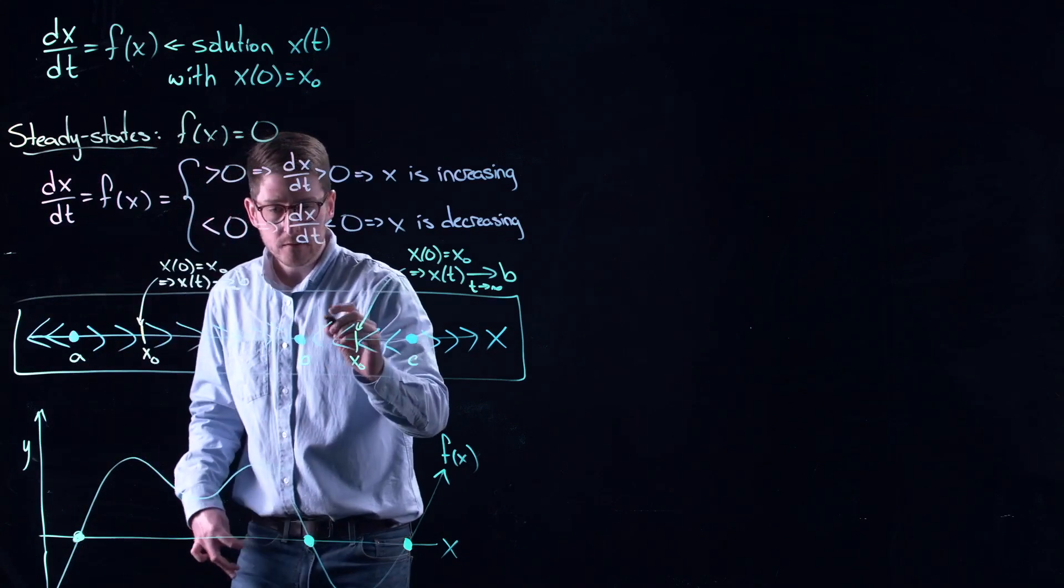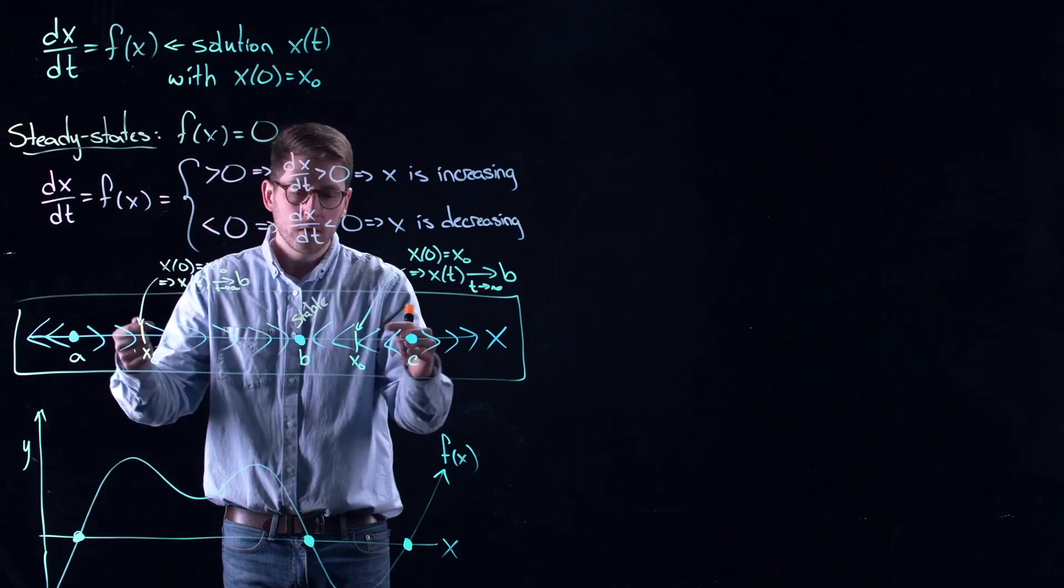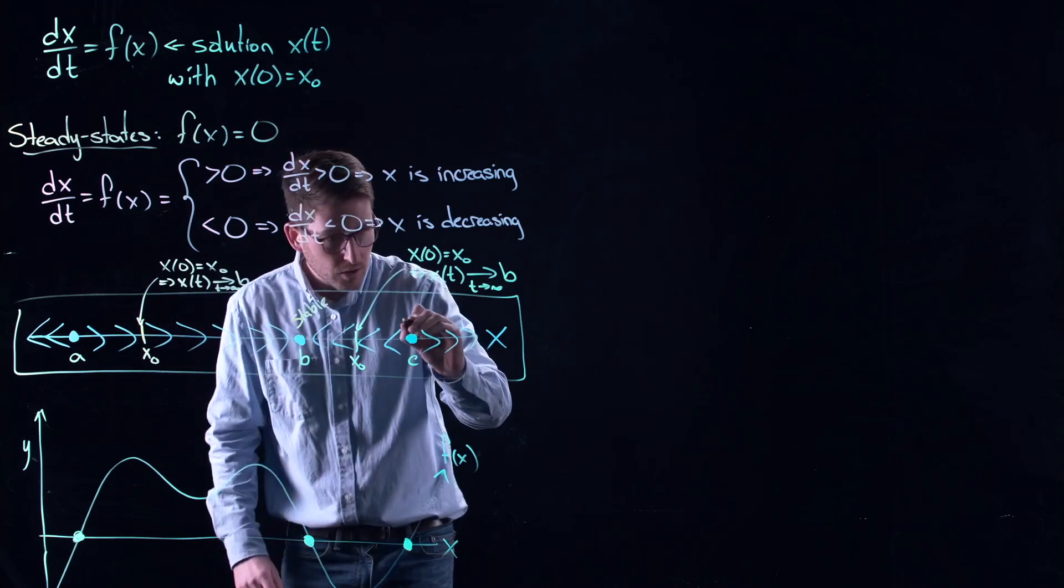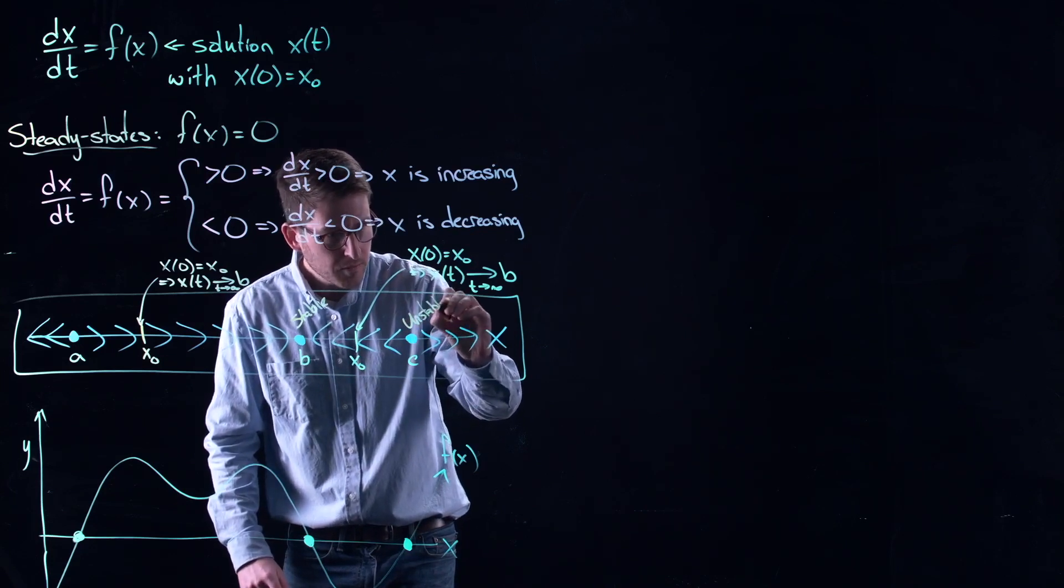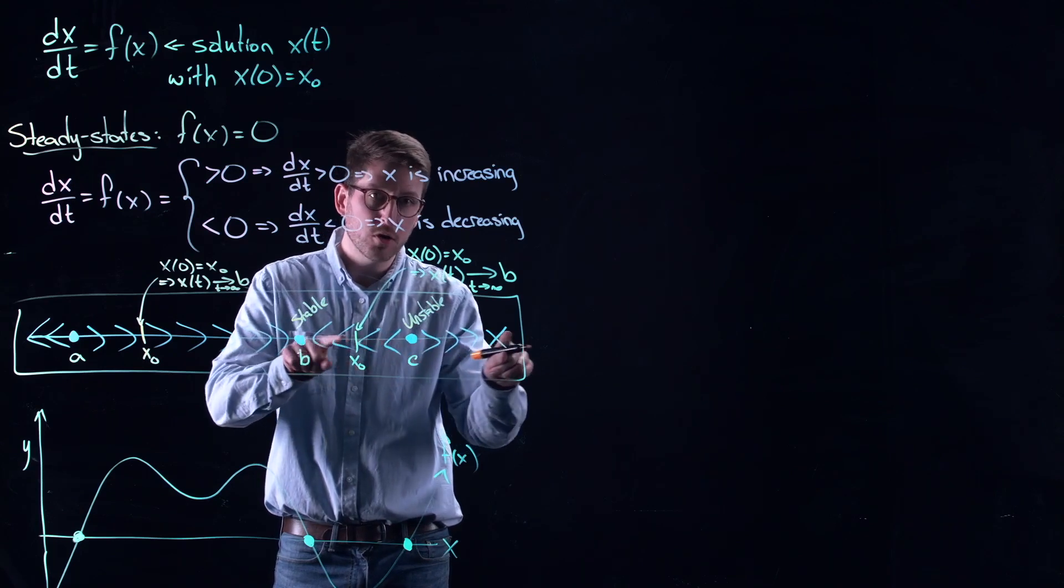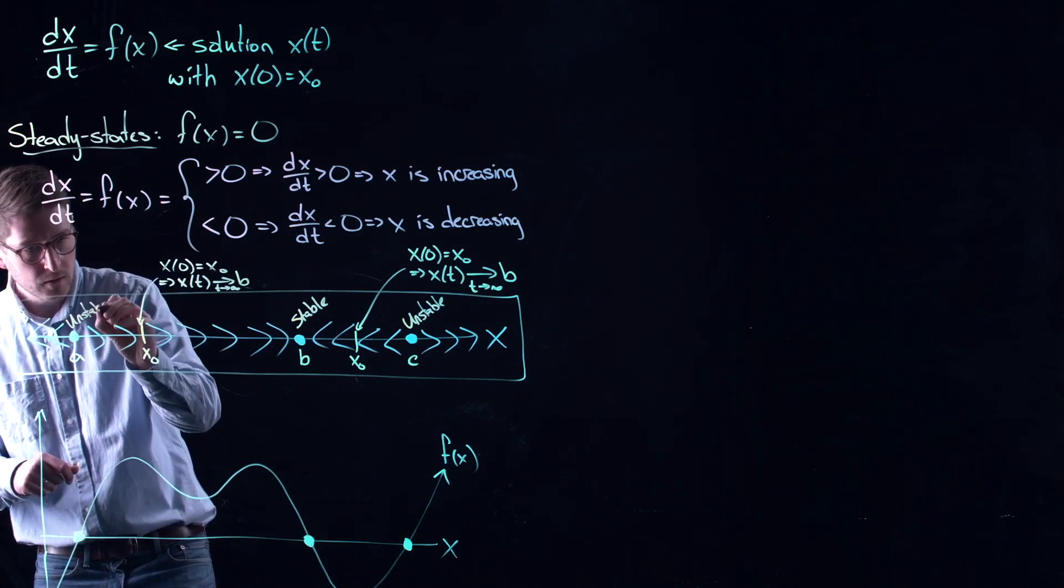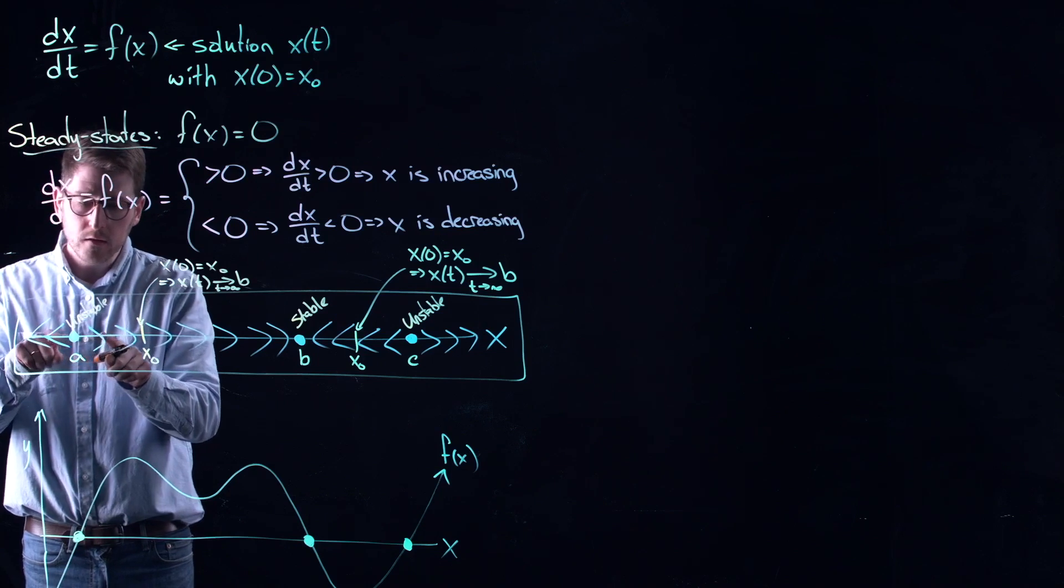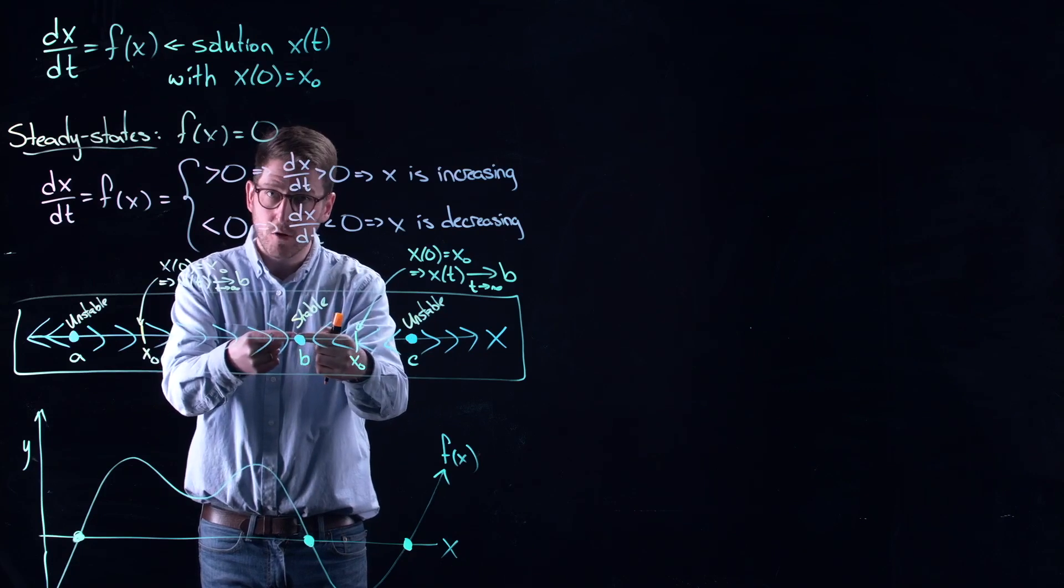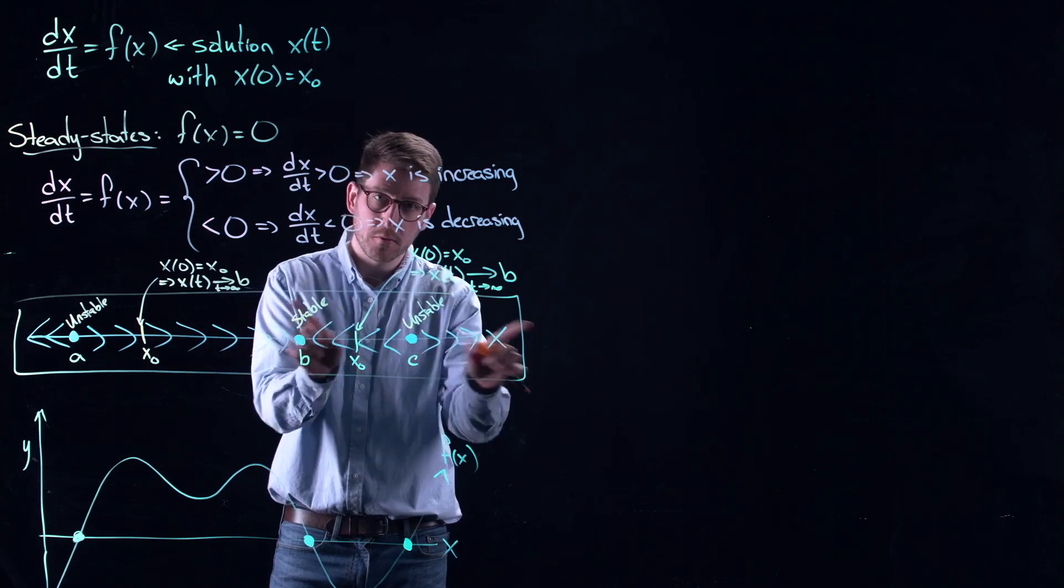So in this case, we would call this stable. Why is it stable? Everything is moving in towards you, if you start close enough. Same thing, we would call this unstable. No matter how close you start to c, if you don't start at it, you're going to get pushed away from it by the flow. Same thing over here, a is unstable. Because if you start close to a, you're always getting pushed away. So b is pulling everybody in, it's like a black hole. Whereas c is pushing everybody away. It's like someone who stinks in the showers.